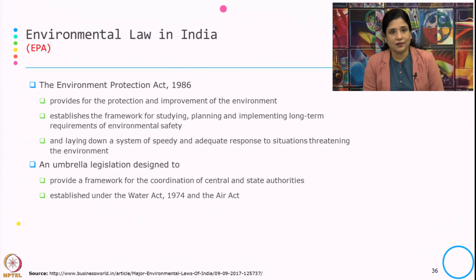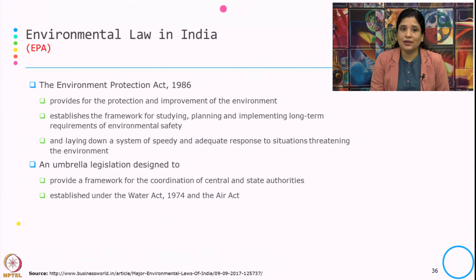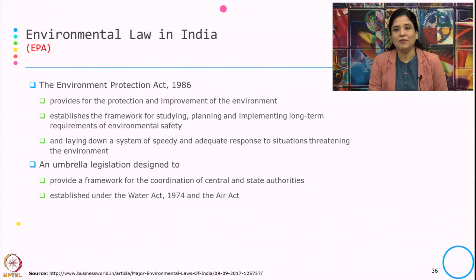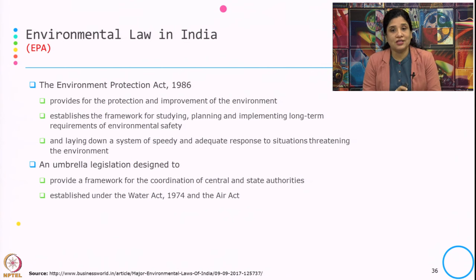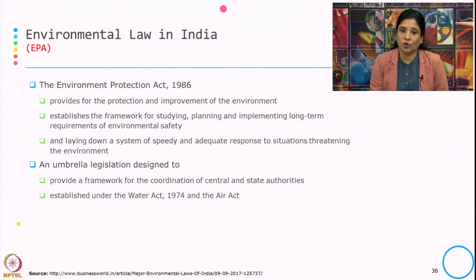Then we have the EPA — the Environment Protection Act 1986. It provides for the protection and improvement of the environment and establishes a framework for studying, planning, and implementing long-term requirements of environmental safety. It lays down a system for speedy and adequate response to situations threatening the environment, and serves as umbrella legislation designed to coordinate all central and state authorities established under the Water Act and Air Act.